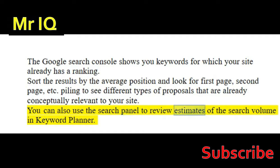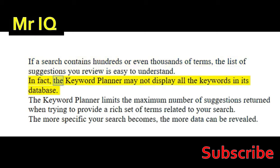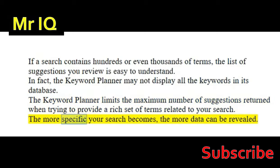You can also use the search panel to review estimates of the search volume in Keyword Planner. If a search contains hundreds or even thousands of terms, the list of suggestions you review is easy to understand. The Keyword Planner may not display all the keywords in its database. It limits the maximum number of suggestions returned to provide a rich set of terms related to your search. The more specific your search becomes, the more data can be revealed.